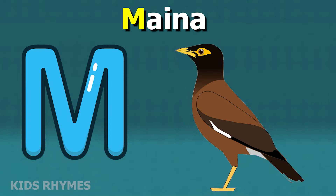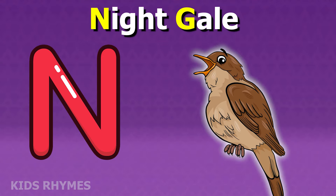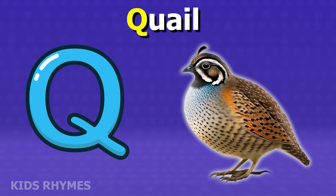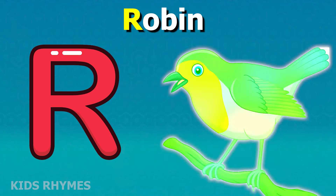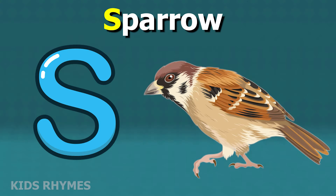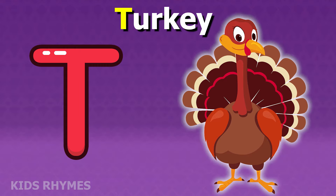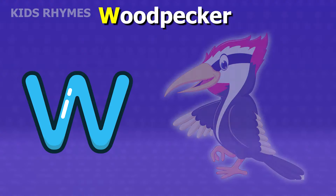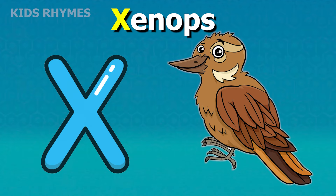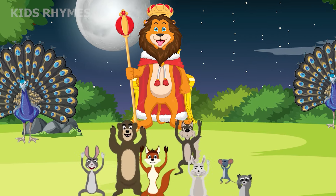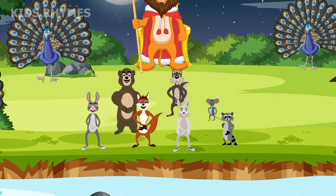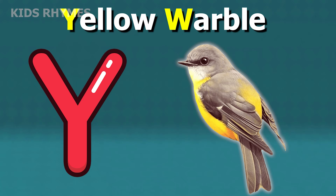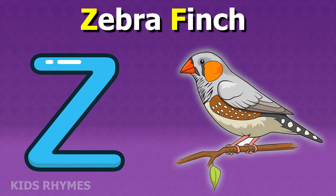M for myna, N for nightingale, O for owl, P for parrot, Q for quail, R for robin, S for sparrow, T for turkey, U for owl, V for vulture, W for woodpecker, X for xenops, Y for yellow warbler, Z for zebra finch.